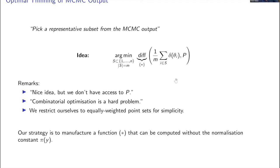We're going to go off on two methodological tangents to address these remarks. The first will allow us to develop a computable measure of difference between an empirical measure and the posterior — something that can be evaluated without knowledge of the normalization constant in closed form. The second will address the combinatorial optimization challenge. To spoil the story: we're not going to actually solve the full combinatorial problem; we're going to instantiate a greedy algorithm instead.